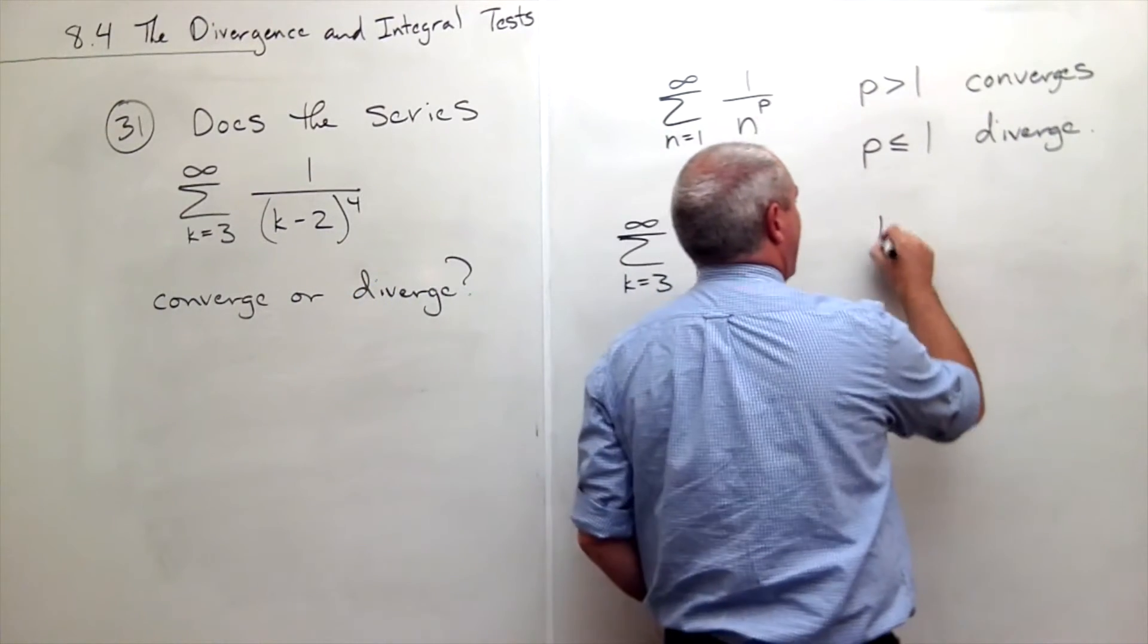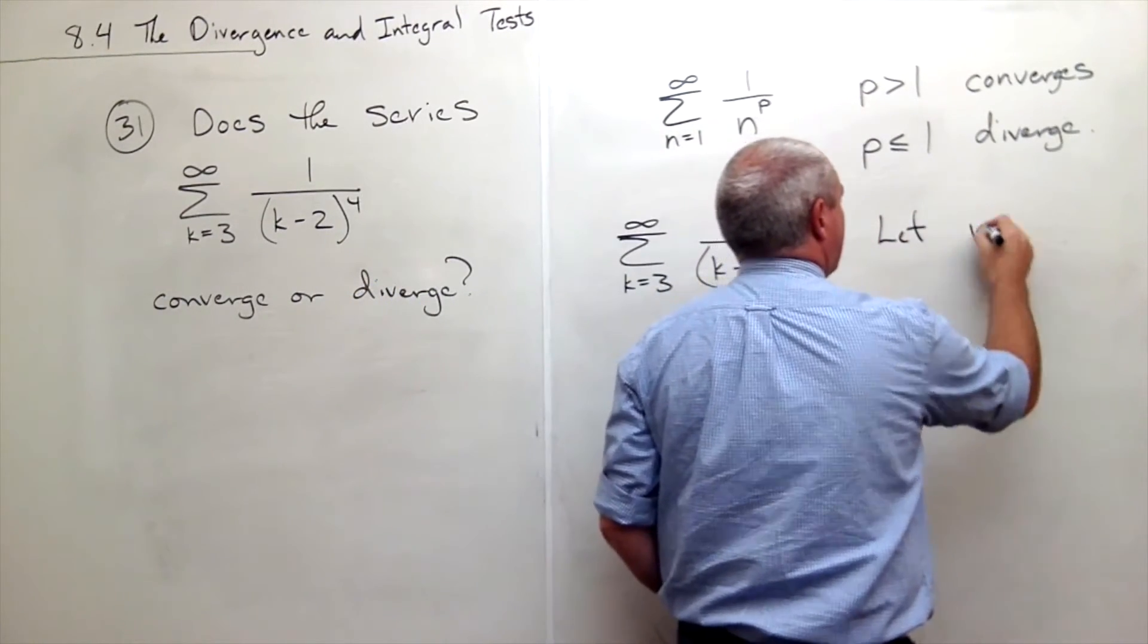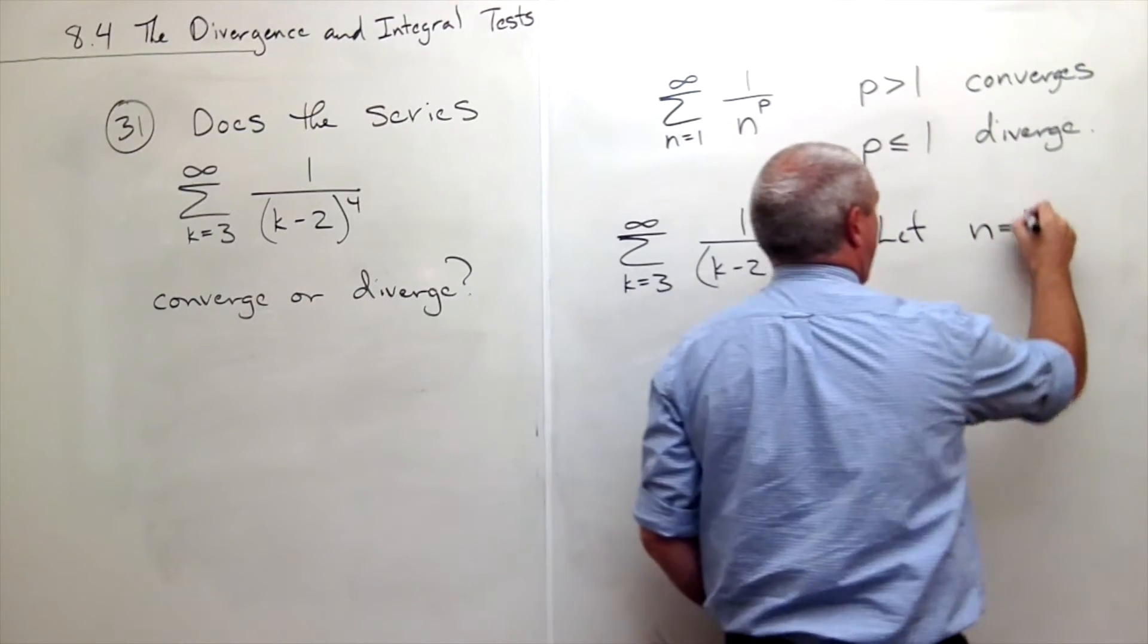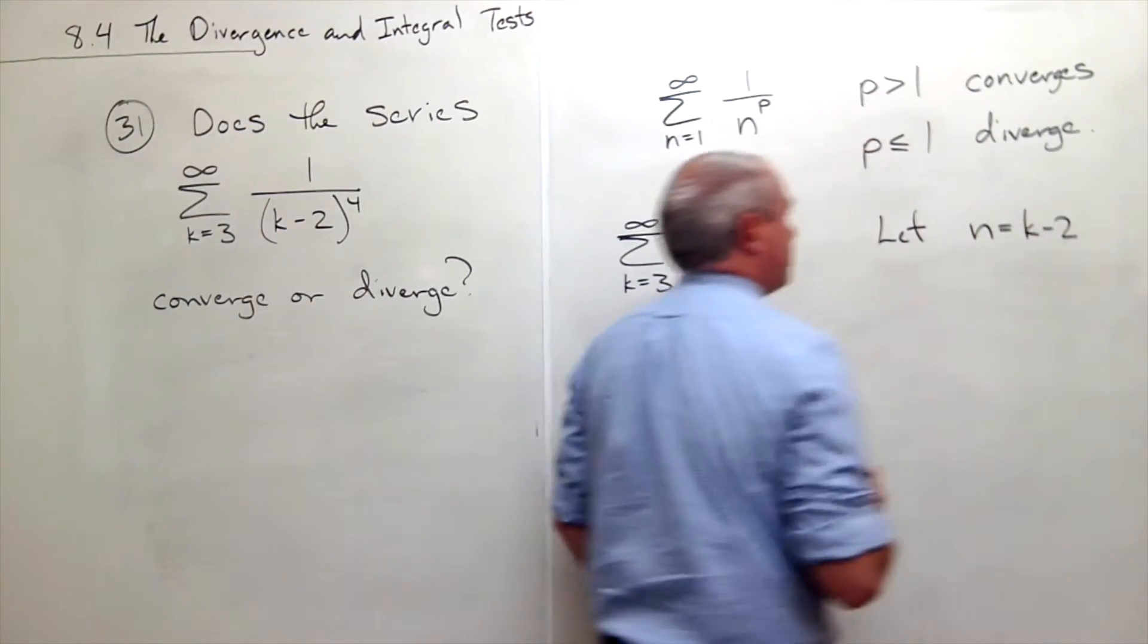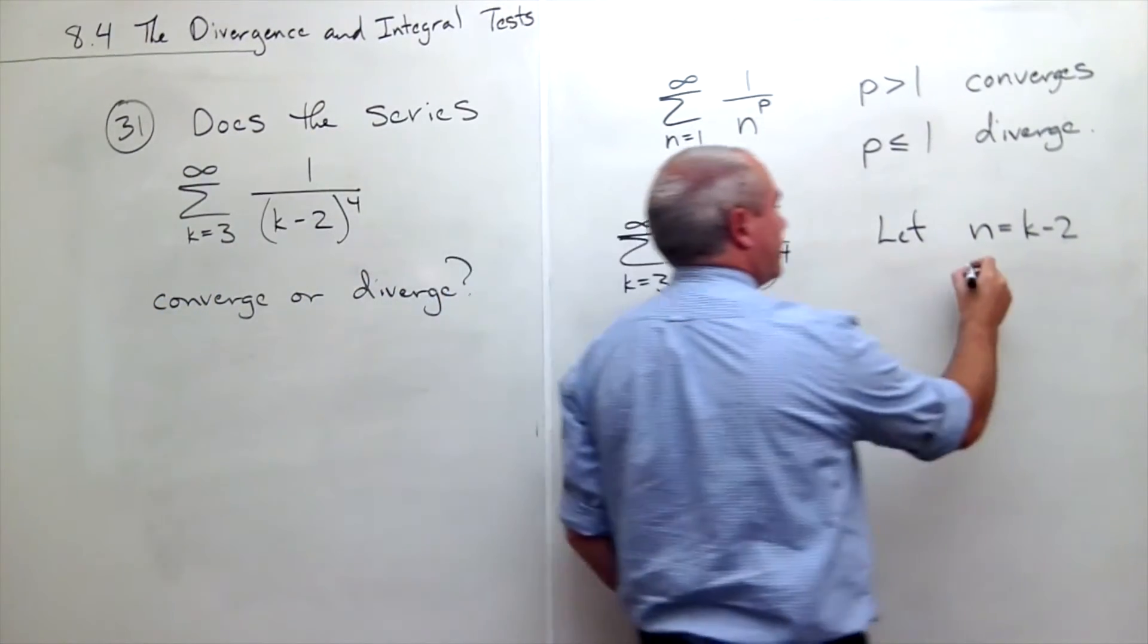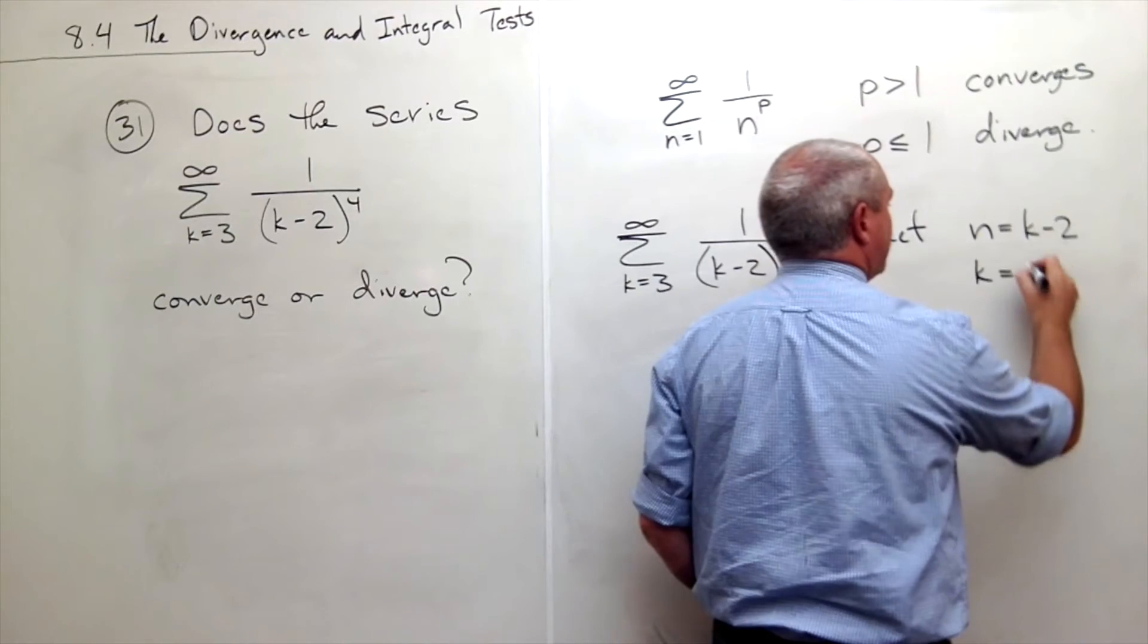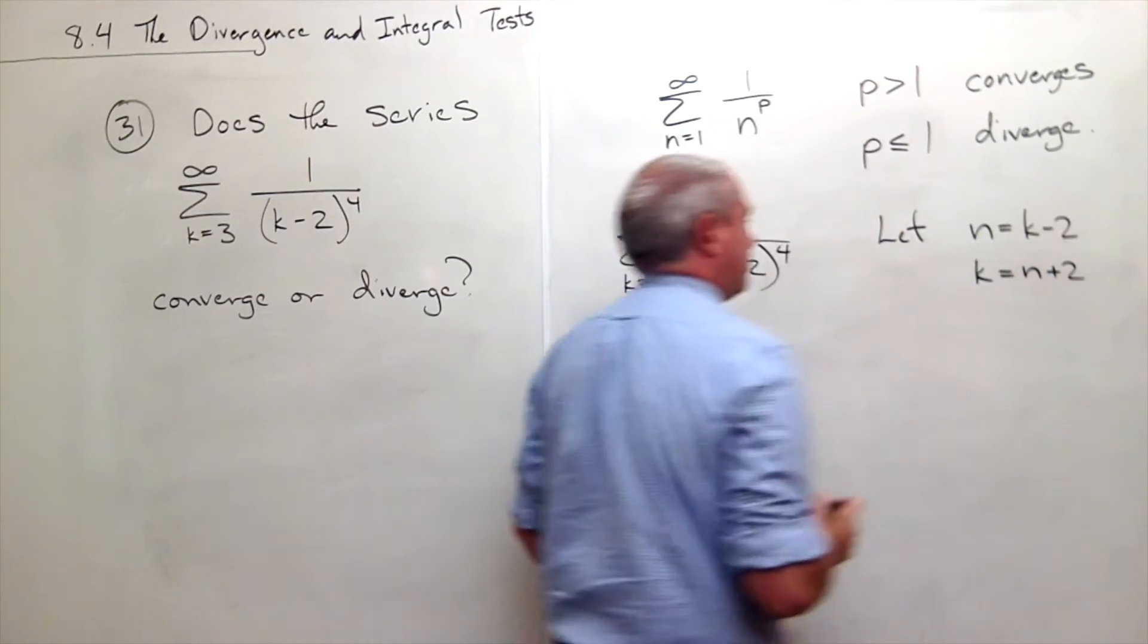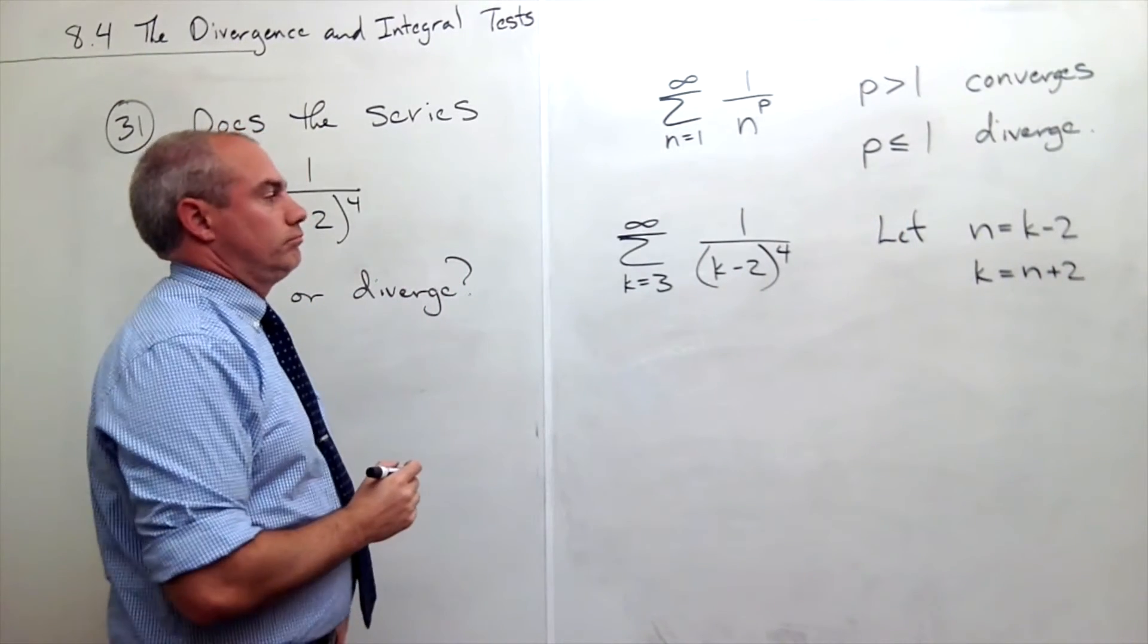So let's let n be equal to k minus 2. If that's true, then k would be equal to n plus 2.